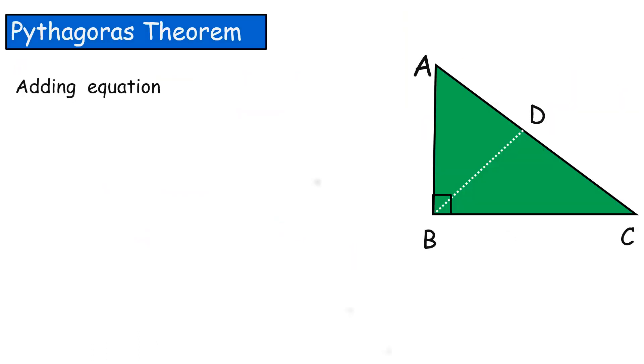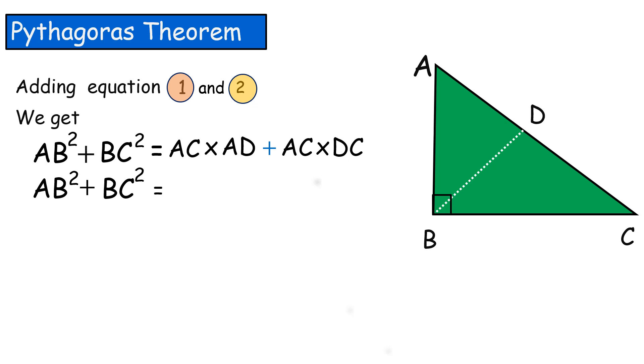Adding equation 1 and equation 2, we get AB² plus BC² is equal to AC into AD plus AC into DC. AB² plus BC² is equal to, here AC is common, AC into remaining terms AD plus DC.